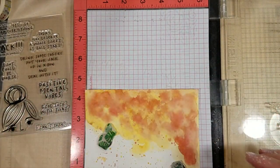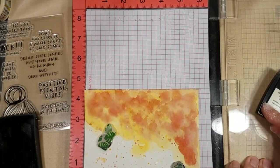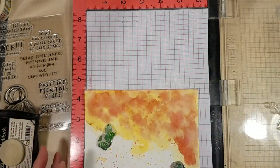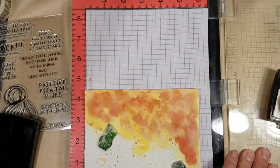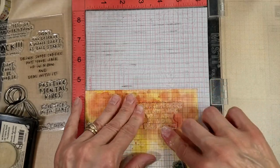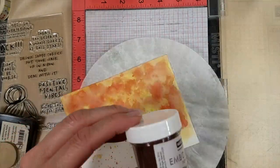I'm going to use my anti-static powder bag, which is just a sock that I put some cornstarch in and stitched shut. And I am using VersaMark ink. I do stamp it twice. Again, this is watercolor paper.